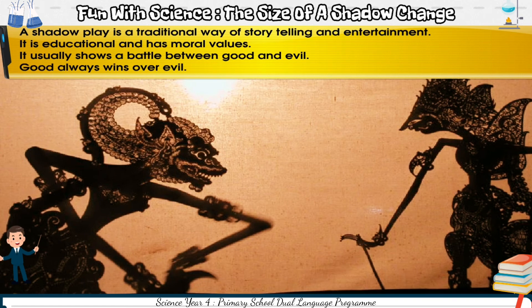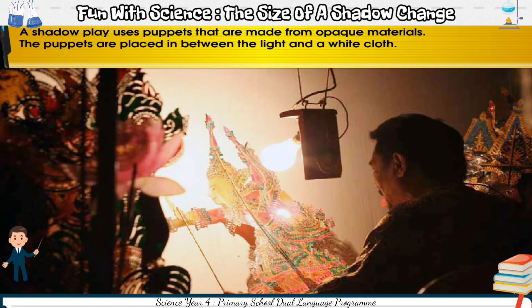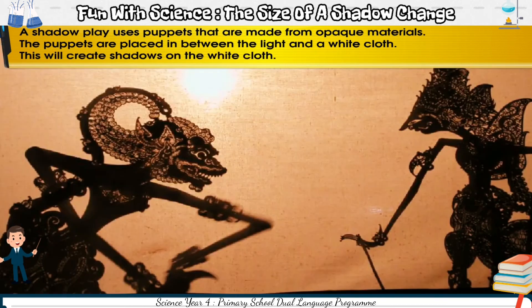It usually shows a battle between good and evil. Good always wins over evil. A Shadow Play uses puppets that are made from opaque materials. The puppets are placed in between the light and a white cloth. This will create shadows on the white cloth.